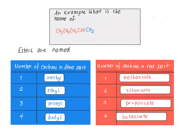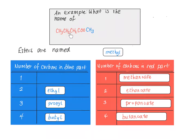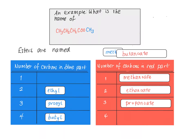Here's another ester. We're going to look at it and work out which bits are from the carboxylic acid and which bits are from the alcohol. This has got one carbon on the alcohol side, so the ester's name starts with methyl. The bit from the carboxylic acid — the bit that goes before the COO — has got one, two, three, four carbons in the red bit. So this ester is called methyl butanoate.